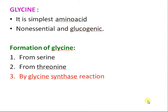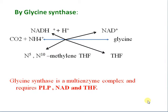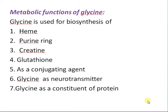Glycine is formed by glycine synthase reactions. Glycine synthase uses carbon dioxide and an amine, and involves N5,N10-methylenetetrahydrofolate. Glycine synthase is a multi-enzyme complex and requires pyridoxal phosphate and NAD as cofactors.